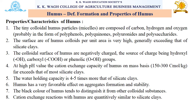At high pH values, the cation exchange capacity of humus on a mass basis is about 150 to 300 cmol per kg, far exceeding that of most silicate clays. The water holding capacity is about 4 to 5 times more than that of silicate clays. Humus has a very favorable effect on aggregate formation and stability. The black color of humus tends to distinguish it from other colloidal substances.